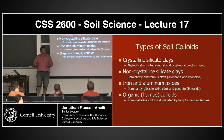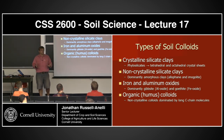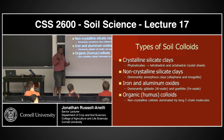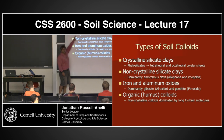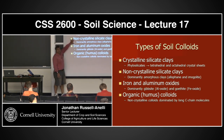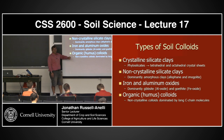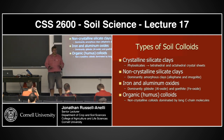So those are the four types of colloids. The first is the crystalline phyllosilicates. The second is the amorphous ones. The third is the sesquioxides. The last is the organic. Any questions?